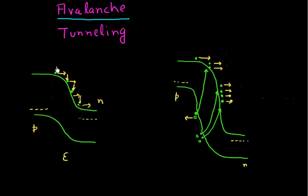Let's think of these rebel electrons which are diffusing from the p-type region to the n-type region, refusing to submit to this electric field which is trying to oppose that. Let's think of these electrons as one of these persons who is trying to ski down the hill.